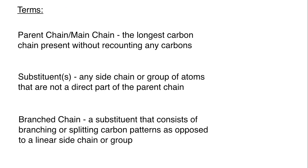Now, terms. There are a couple of terms we want to familiarize ourselves with because we'll be using them a lot when we discuss the naming rules. The first is parent chain or main chain — I'll use these interchangeably. This is the longest carbon chain present without retracing any of your steps when counting carbons. You cannot take a carbon, count it, and then recount it in some form or fashion.